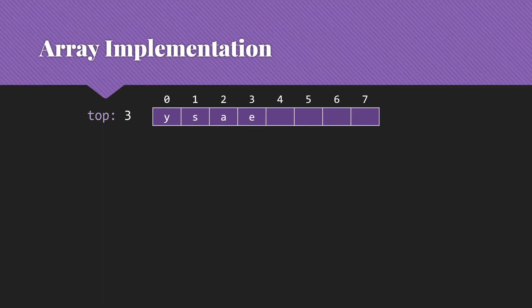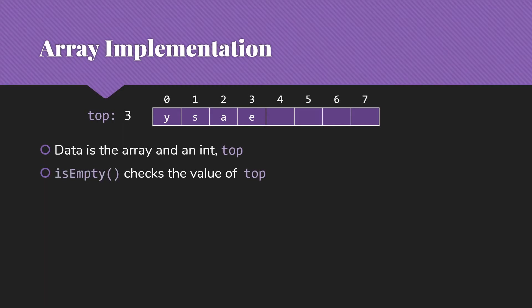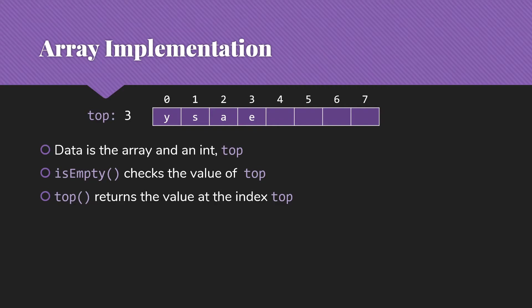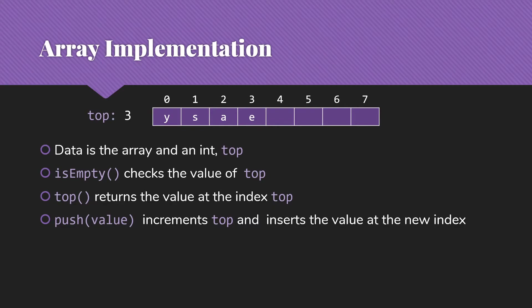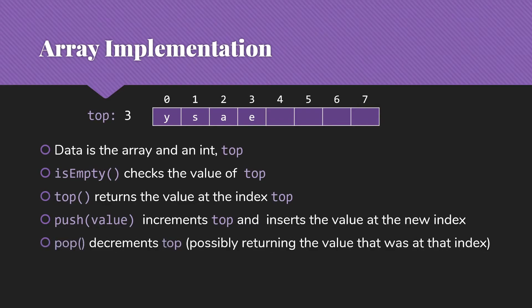In the array implementation, we'll have the data array and an int called top that keeps track of where the top of the stack is. isEmpty simply checks the value of top — when top is minus one, the stack is empty. The top method returns whatever value is at index top, in this case the letter E. Push increments top and inserts the value at that new index — so if we push something else, we change top to four and put that value in the four slot. Pop simply decrements top, and if we're also returning the value, we grab it first and then decrement.